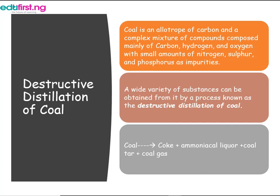Coal is composed mainly of carbon, hydrogen, and oxygen, with small amounts of nitrogen, sulfur, and phosphorus as impurities. A wide variety of substances can be obtained from it by the process known as the destructive distillation of coal.